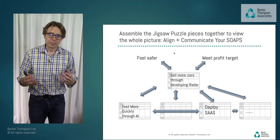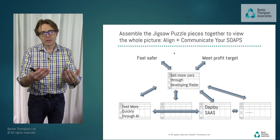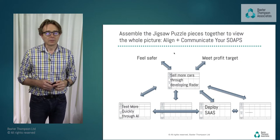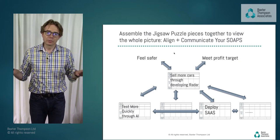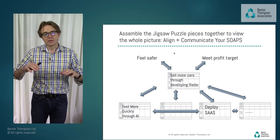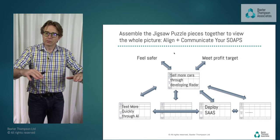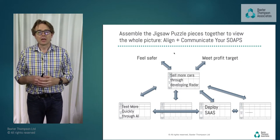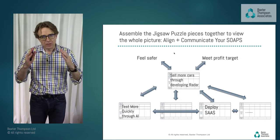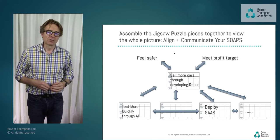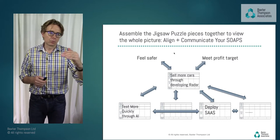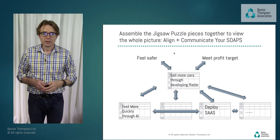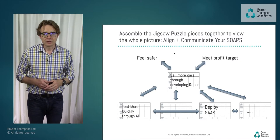This is the dependency — all working together towards the same outcome of making the cars safer. It's only when you put the jigsaw pieces together across the organisation that you can see the interdependencies and shared alignment in terms of outcomes that achieve the corporate-level goal: sell more cars through developing radar technology.